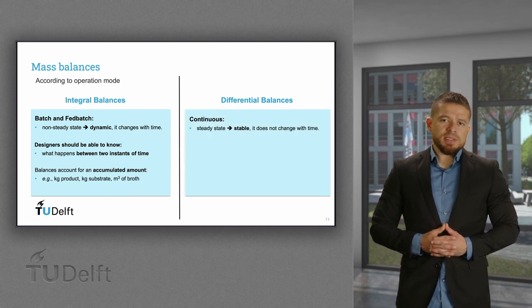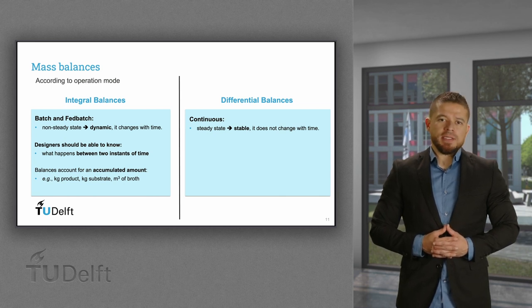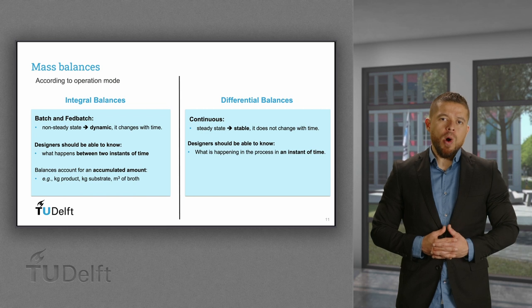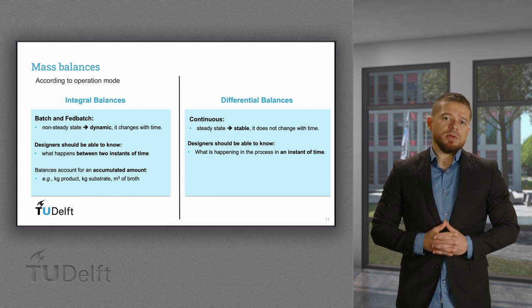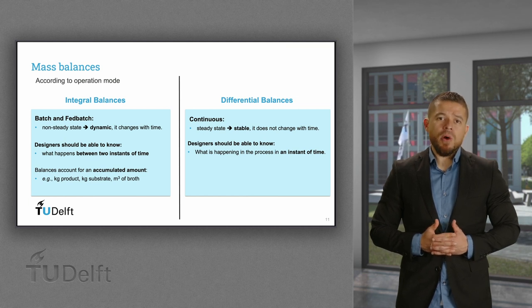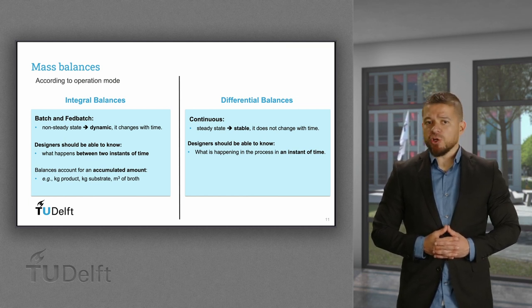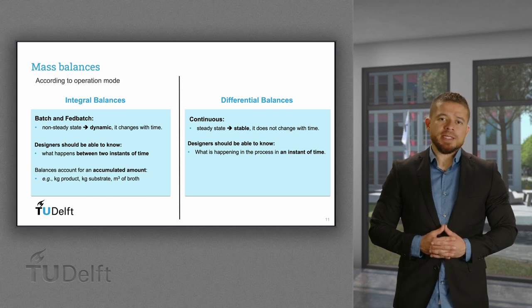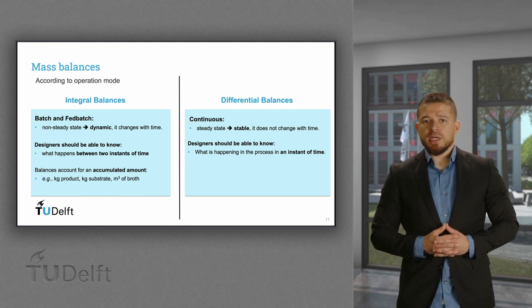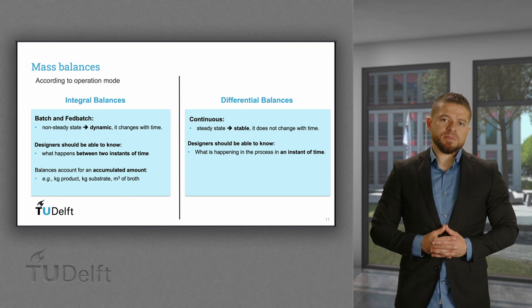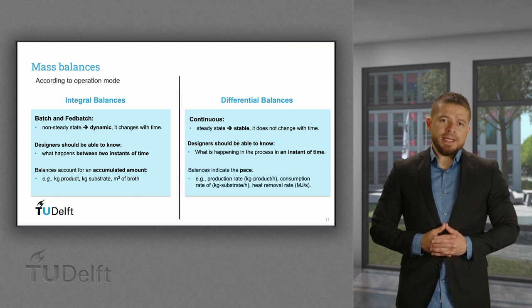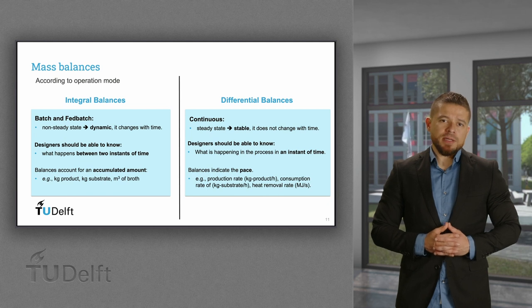Differential balances are for steady-state systems like the chemostat. In this case, designers should know what is happening in the process at an instant of time — for example, how much product is being produced now, how much substrate is being consumed, or how much heat should be supplied or removed in a continuous manner. These balances indicate the rate of changes occurring in the process at an instant of time.